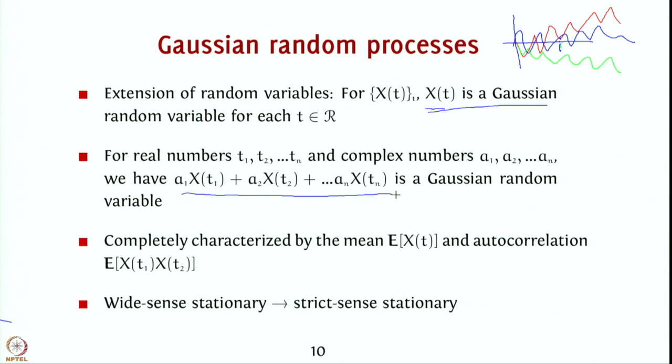A Gaussian random process is completely characterized by its mean and its autocorrelation function. Recall that a jointly Gaussian random vector only needs its mean and covariance matrix. Similarly, the covariance matrix generalizes to the autocorrelation function, which tells you the relationship between pairs of random variables for every pair of times t1 and t2.